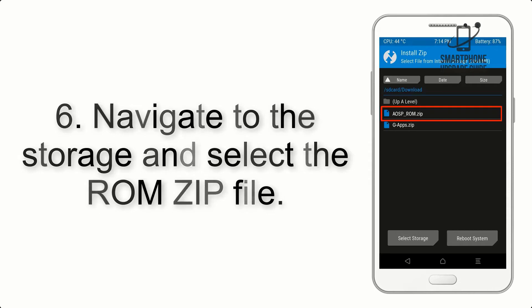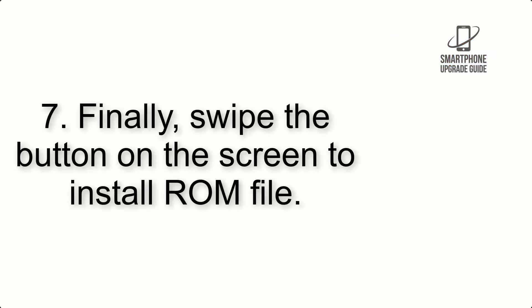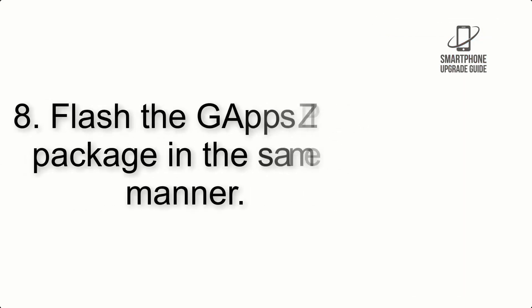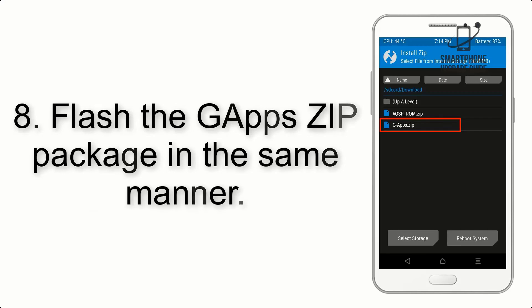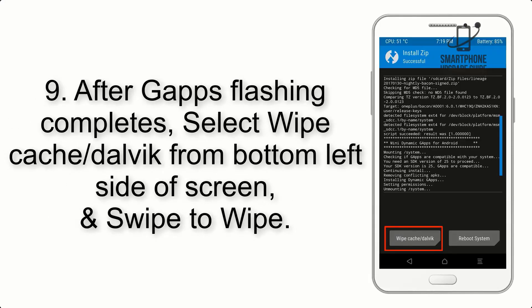Step 5: Go back to the recovery main screen and tap on the Install button. Step 6: Navigate to the storage and select the ROM zip file. Step 7: Finally, swipe the button on the screen to install the ROM file.